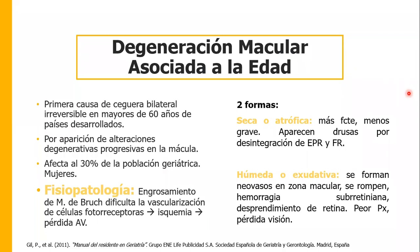Ya vimos catarata y glaucoma. Ahora la degeneración macular asociada a la edad, que es la primera causa de ceguera bilateral irreversible en mayores de 60 años en países desarrollados. Se da por alteraciones degenerativas progresivas en la mácula, que es la mancha que vemos en el fondo de ojo al lado del disco óptico, y cuyo centro es la fóvea, el punto de visión fina. Afecta al 30% de la población geriátrica, especialmente a las mujeres. En la fisiopatología hay un engrosamiento de la membrana de Bruch que dificulta la vascularización de las células fotorreceptoras.